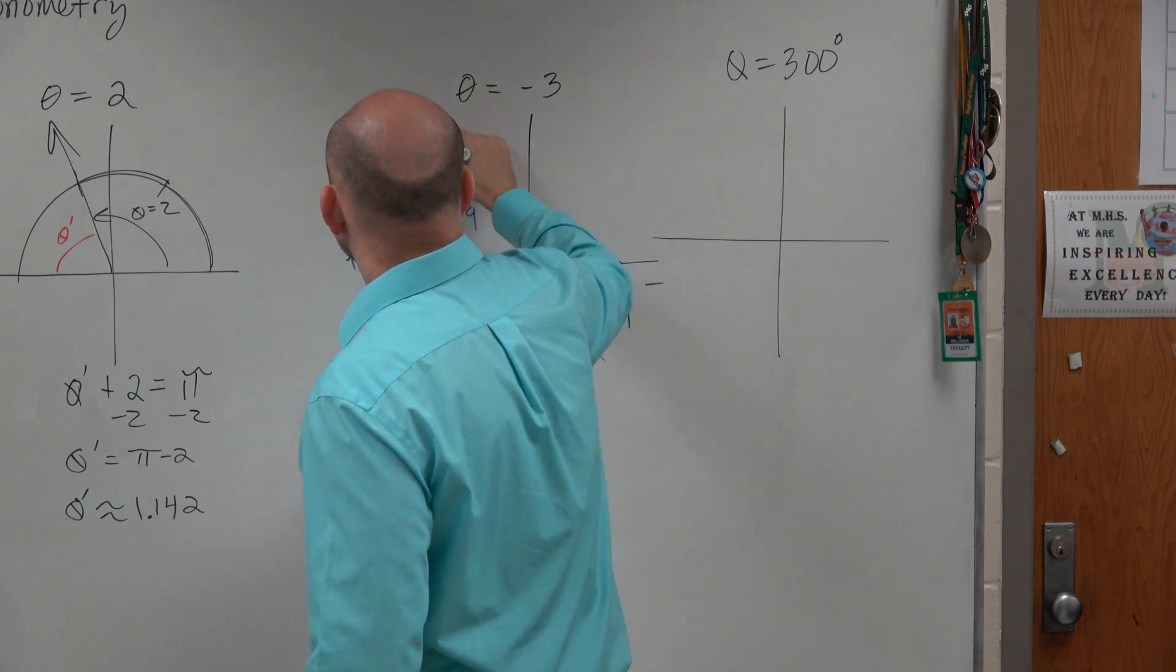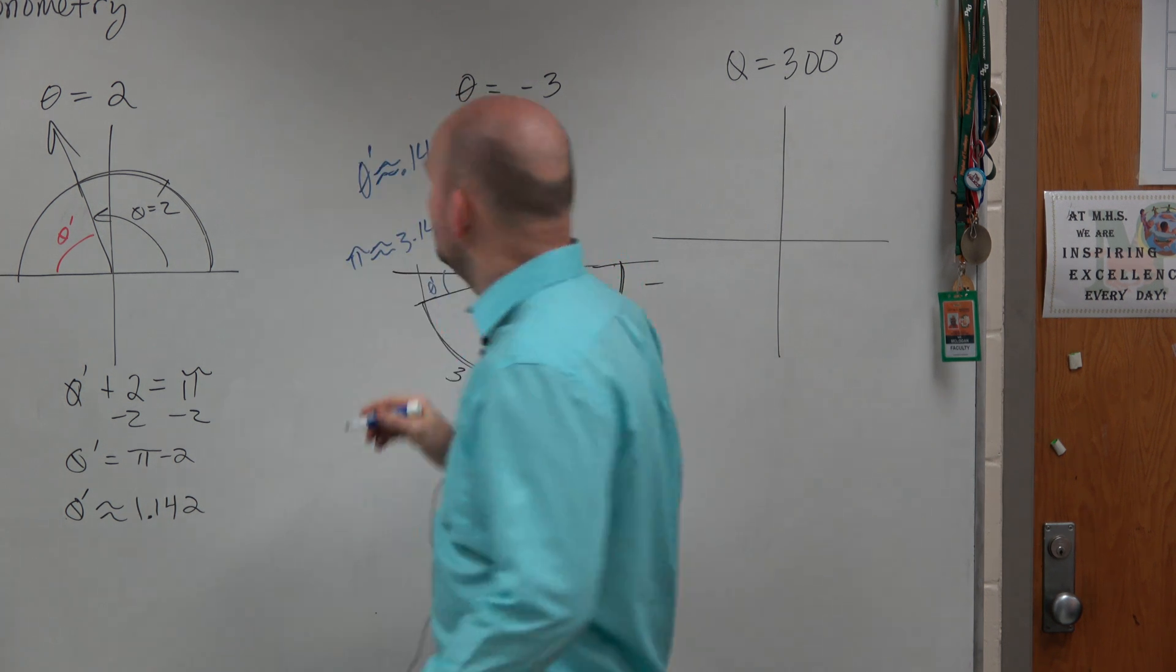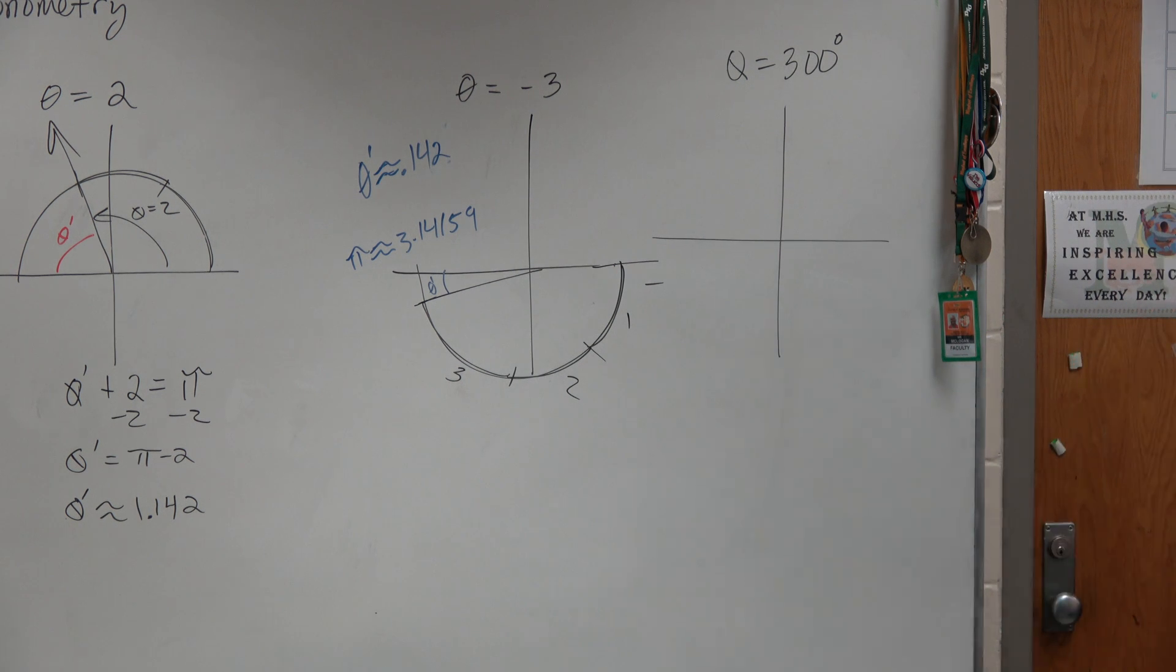Let's just round it to 2. Approximate to 0.142. Cool? Make sense? Kind of?